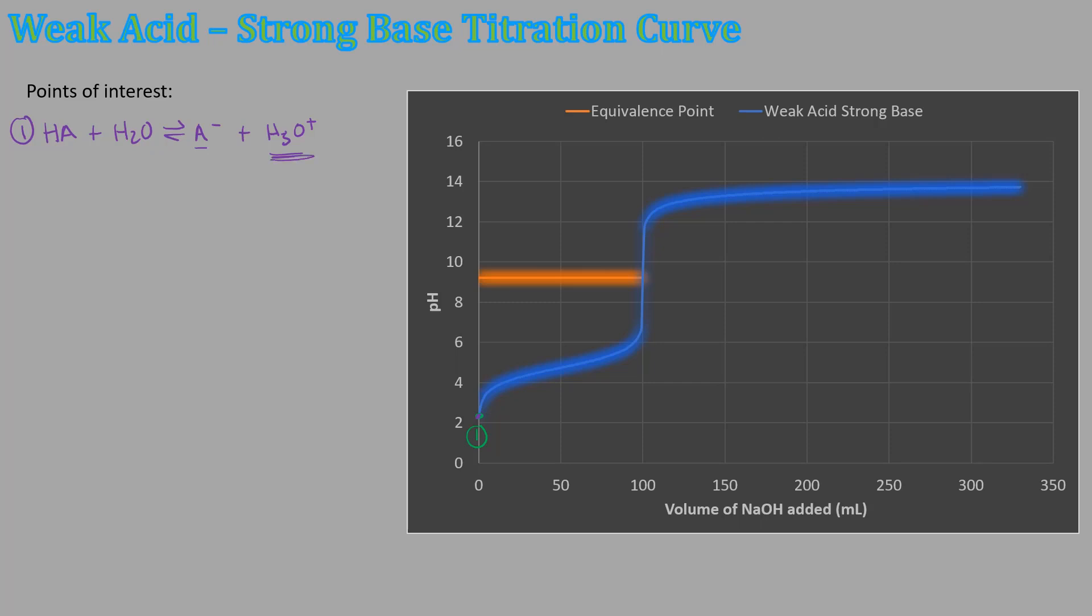And then we start adding base to it. And once we start adding base and we get out of this little dip area and we're in this area, this is called the buffer region. So in that region, we are making a buffer and that is because we're adding base to acid. And so the weak acid is reacting with the base as completely as possible. And it's making conjugate base. So since we've generated enough conjugate base here and we have the weak acid still left over in solution, cause we haven't reacted all of it because there's more weak acid left. So we haven't added enough hydroxide to react at all yet. Then that means we've created a buffer here, because we have a weak acid and its conjugate base in solution.